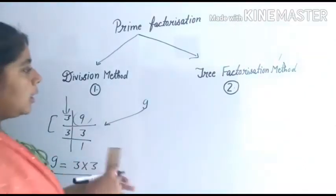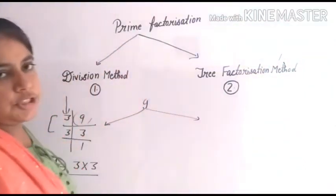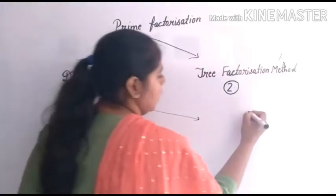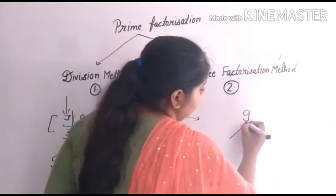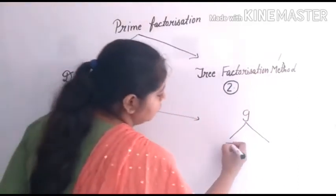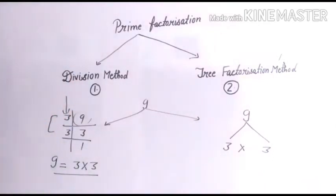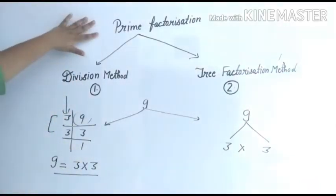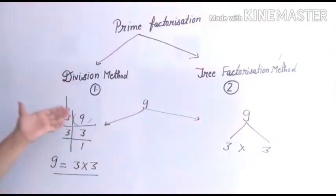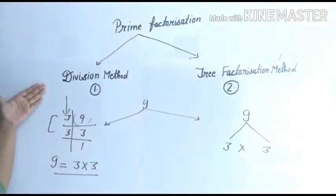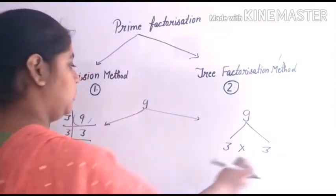So here we have two types of factorization methods. First one is the division method. Second one is the tree factorization method. Nine is broken as three multiply three.